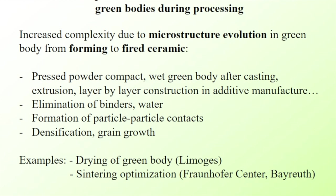The previous set of examples showed how refined computer models of ceramics with stable microstructures can be. The next challenge is to look at green body behaviour during processing. The important point is that after forming, the microstructure evolves as we go through elimination of binders or water, formation of particle-particle contacts, densification and grain growth. We're going to look at two different examples — one on drying and one on sintering.